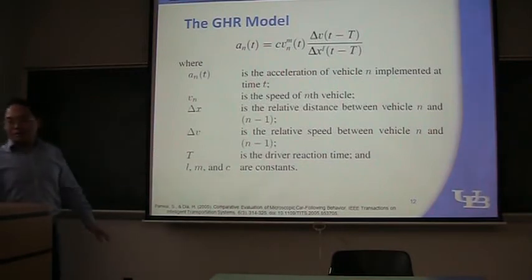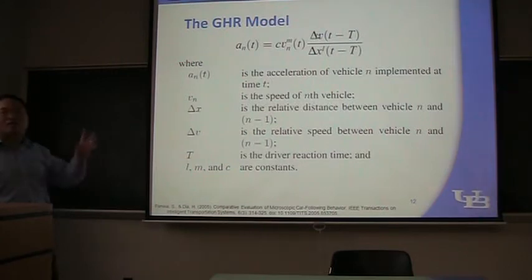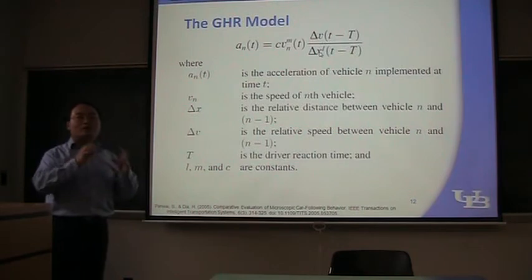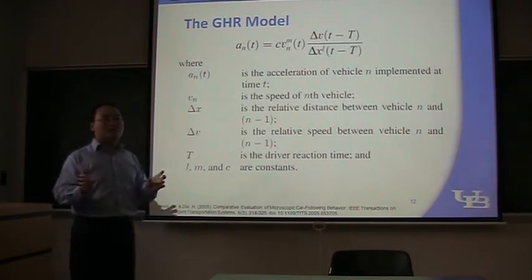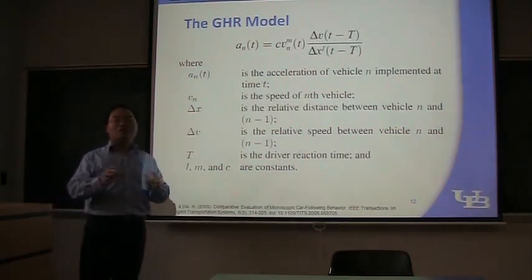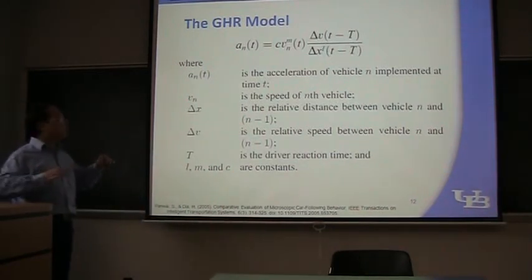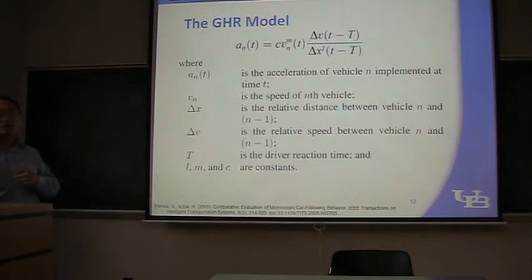The GHR model, in the beginning, they only considered two factors: delta V, which is the difference of velocity, and delta X, which is the difference of position or the distance. In the beginning, they only considered these two factors. And they tried to use regression to find out some constants that are related with them.